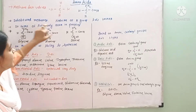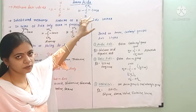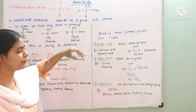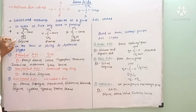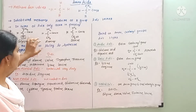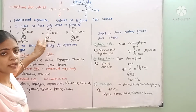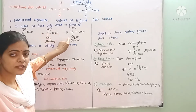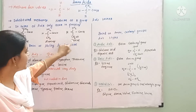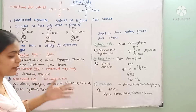Depending upon the R group, the amino acid varies. In the R group, different chemical compounds are replaced. For example, if the R group contains hydrogen, that amino acid is called glycine — a simple amino acid. If the R group is replaced by a methyl group, it is called alanine. If replaced by a hydroxymethyl group, it is called serine.